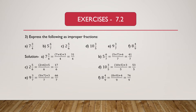Now we will solve question number 3. Question number 3 says: express the following as improper fraction. We are given mixed fractions to convert. Part A is given as 7 and 3/4. We know improper fraction equals whole multiplied by denominator, and that result is added to numerator, divided by denominator. Here 7 is the whole and 3/4 is the proper fraction. So 7 multiplied by 4 is 28, and 28 plus 3 equals 31. So 7 and 3/4 equals 31/4.